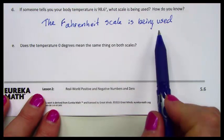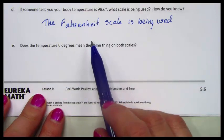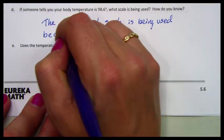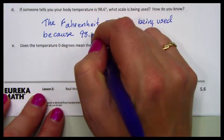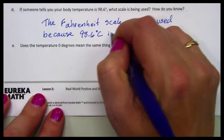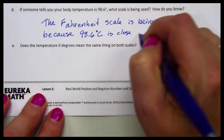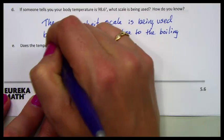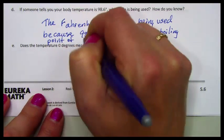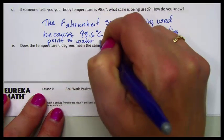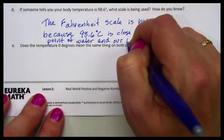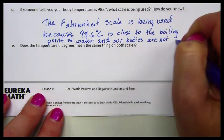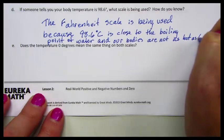Whenever we give a response, we need to make, or we make a claim, we need to have a support for it. So the Fahrenheit scale is being used because 98.6 degrees Celsius is close to the boiling point of water. And our bodies are not as hot as that.